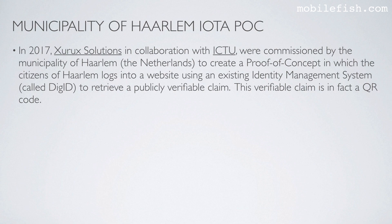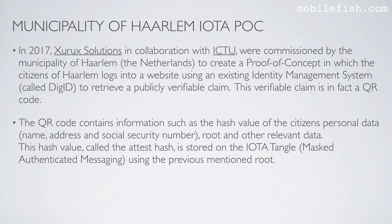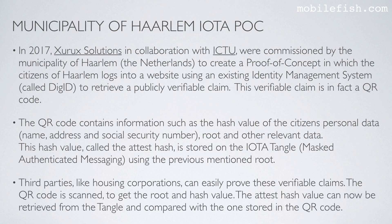This verifiable claim is in fact a QR code. The QR code contains information such as the hash value of the citizen's personal data — for example name, address, and social security number — root and other relevant data. This hash value, called the test hash, is stored on the IOTA tangle using the previously mentioned root. Third parties like housing corporations can easily prove these verifiable claims.